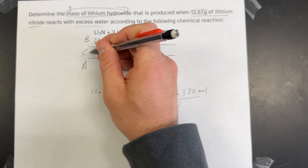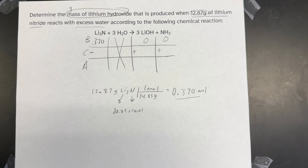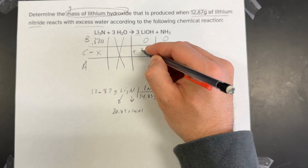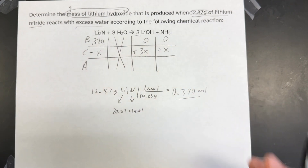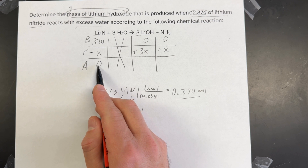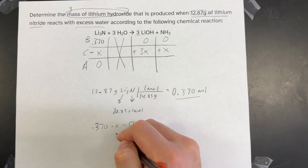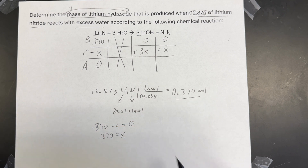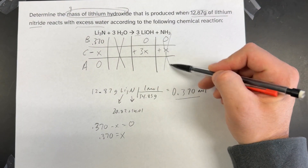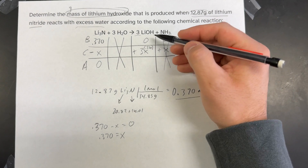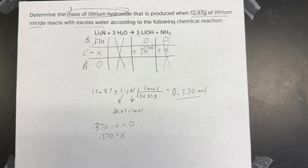I'll fill in the change row: I'm losing reactant and gaining product. In the balanced chemical reaction, the coefficient for Li3N is 1, so this is minus X. The coefficient for LiOH is 3, so that's plus 3X. The coefficient for NH3 is 1, so that's plus X. After the reaction finishes, I have zero reactant left. Setting up the equation: 0.370 minus X equals 0, so X equals 0.370. Plugging in: 0 plus 3 times 0.370 equals 1.11 moles of lithium hydroxide.